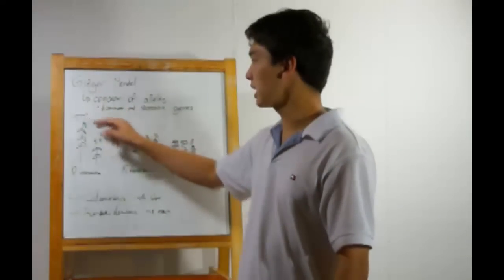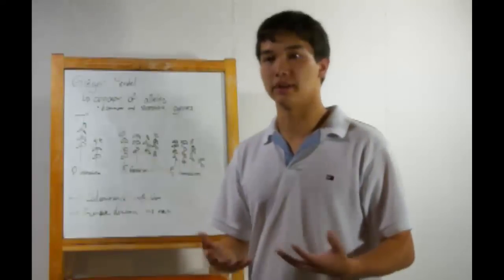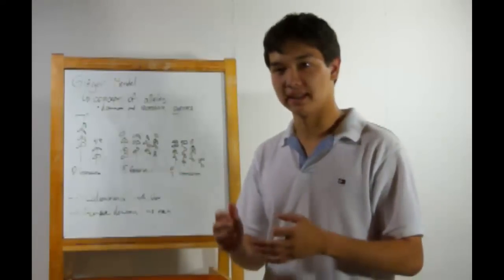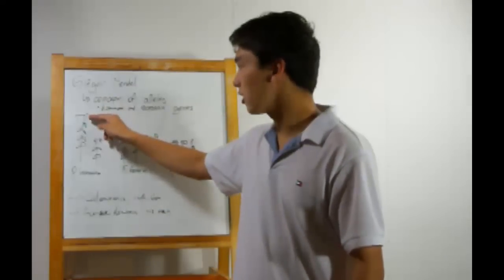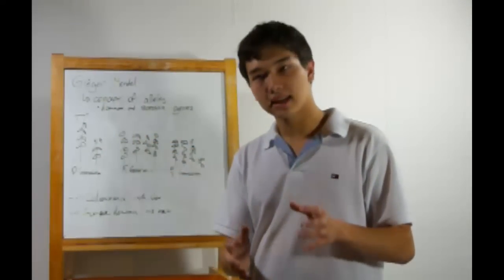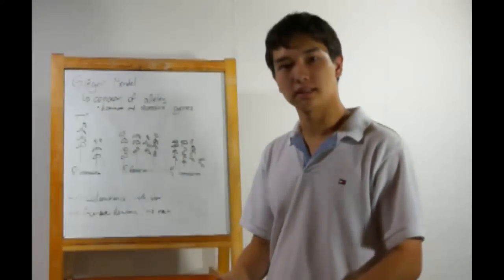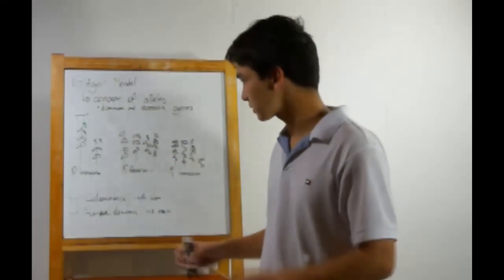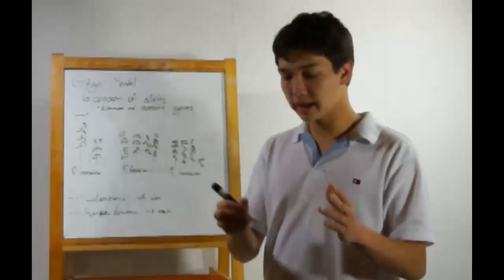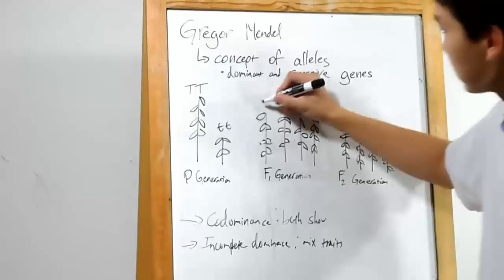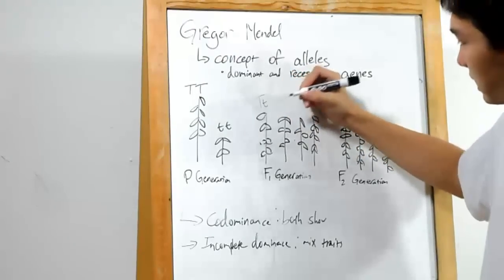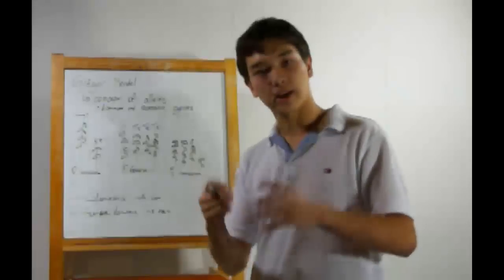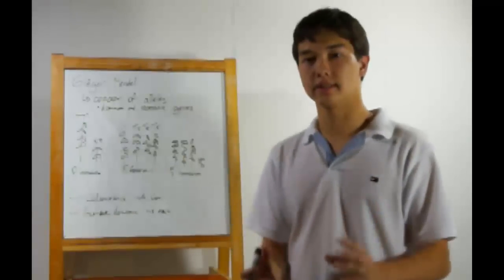Whenever we write our allele notation, the letter is taken from the first letter of the dominant gene — in this case, tall. The recessive allele is shown by a lowercase version of that same letter — in this case, representing short. When Mendel crossed these, he ended up with plants that had both a big T and a little t. Since they all had a big T, they all expressed the dominant trait — tallness.